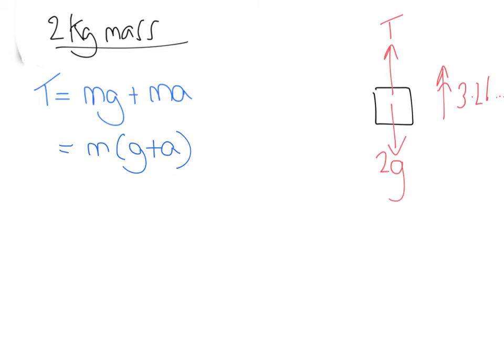If you don't believe me, multiply it out and see what you get. In this case, the mass is 2, 9.8 plus 3.26 dot dot dot. Notice I'm using the unrounded version as usual. If you do this calculation, you should come up with 26.1 newtons.